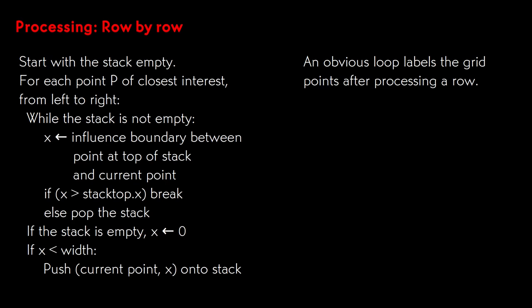Once we've completed the row, a second pass through the pixels can label them with the point of interest, or with the distance, by simply reading the information out of the stack.